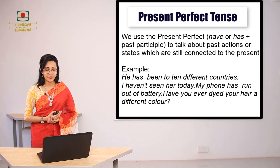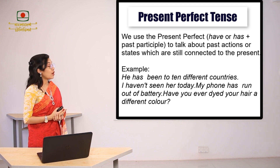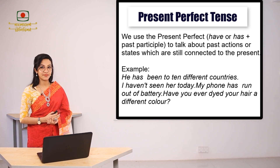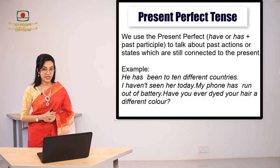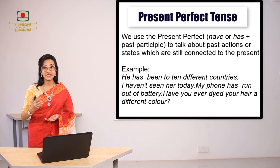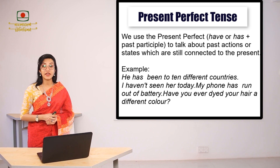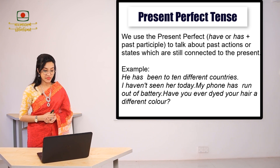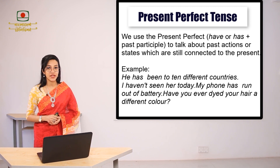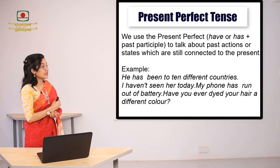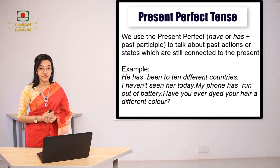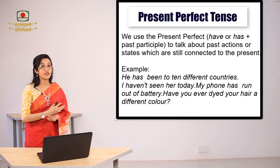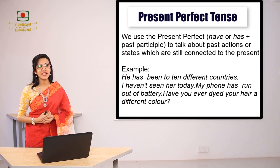Where do we use present perfect tense? We use present perfect tense to talk about past actions or states which are still connected to the present. For example: 'He has been to 10 different countries.' In these structures, the events talked about have been completed before, but they still have a connection with the present.